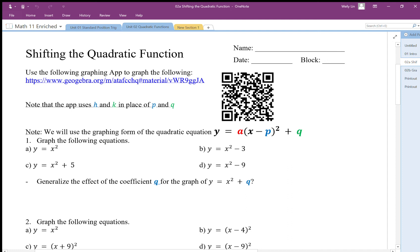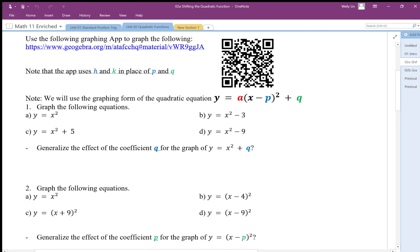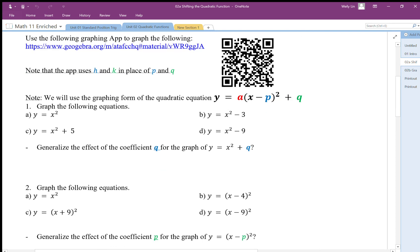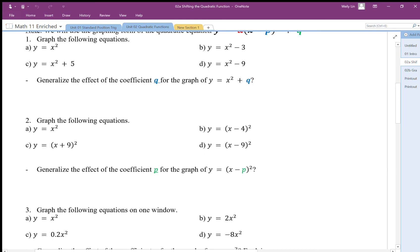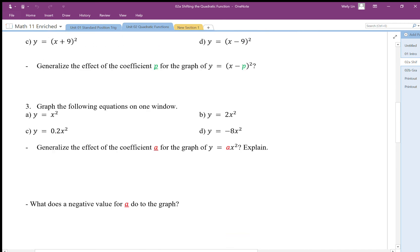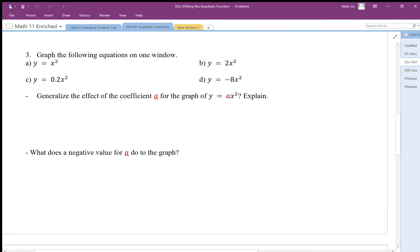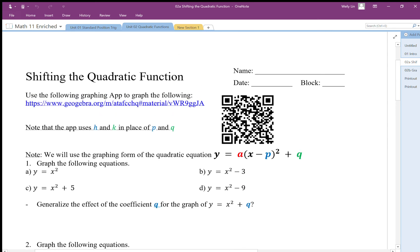and facing up. We're going to investigate what all these different parts—in this case q, in this case p, and the a value—how they affect the parabola. I want you to use this app to investigate this.